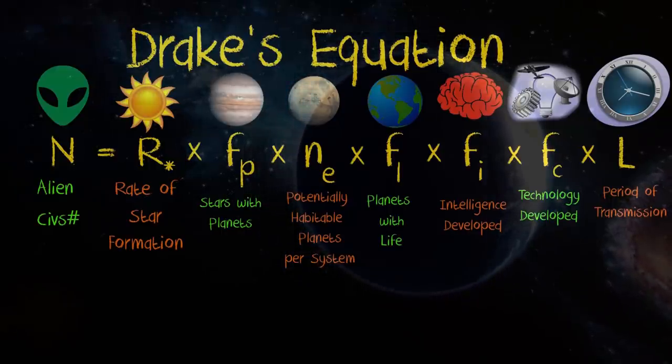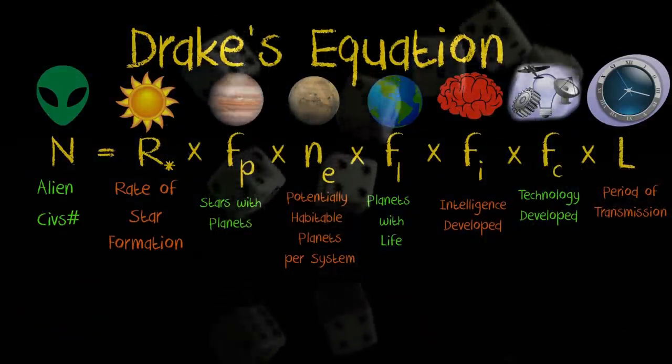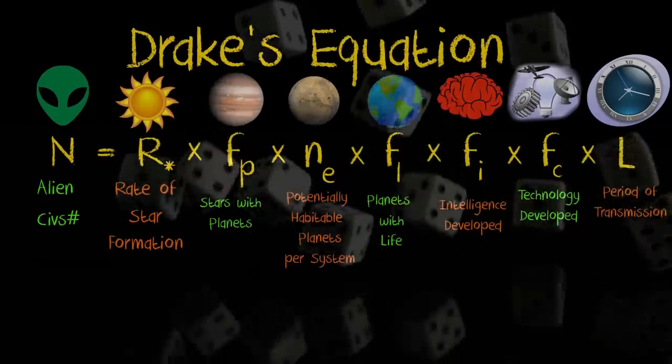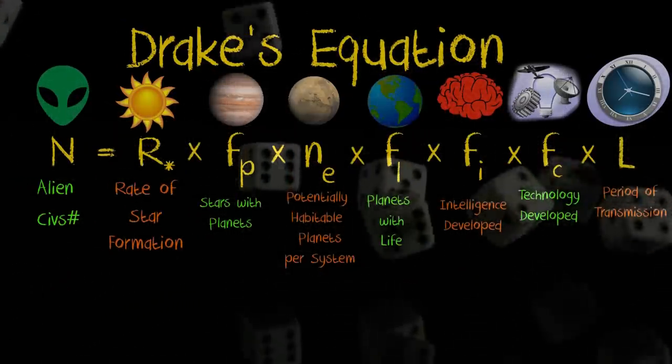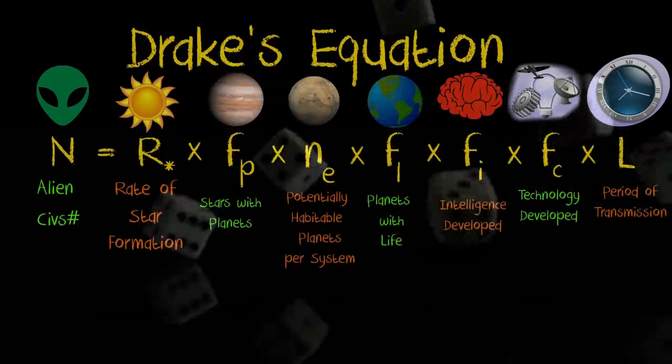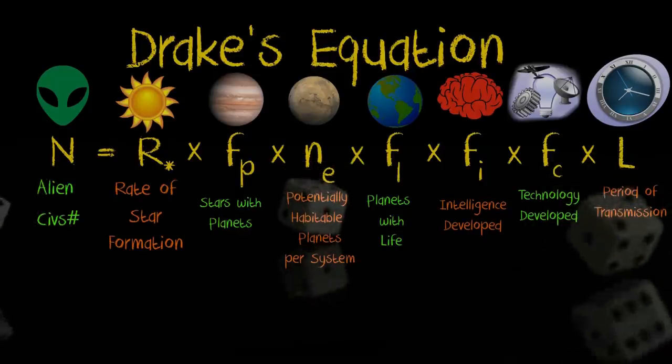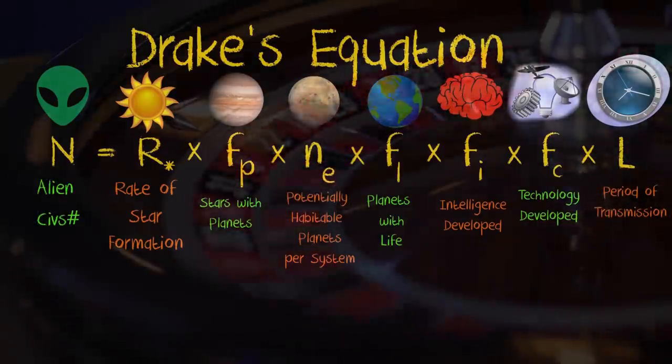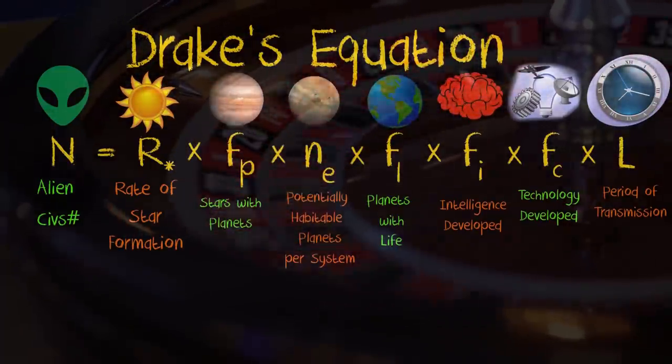Another big flaw though is not with the equation itself but how it's framed. Probabilistic arguments are only meant as loose setups until you can get better data, and people have a tendency to assume each term is in the same general region of likelihood. All of those factors might be 1 in 10, except one of them, and the probability could end up being 1 in 10 quintillion, rather than a smaller number we might be expecting based on intuition. The probability of the others doesn't matter.